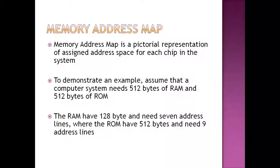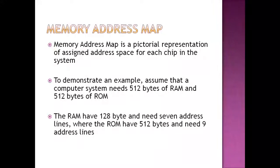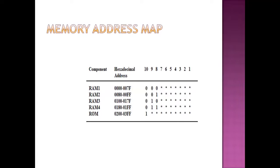According to the configuration of 128x8 RAM, we need seven address lines, so each RAM chip will have seven address lines. Our ROM capacity is 512 bytes, so 512x8 ROM needs nine address lines. Since we use hexadecimal addresses, four bits are used to represent each hexadecimal digit.